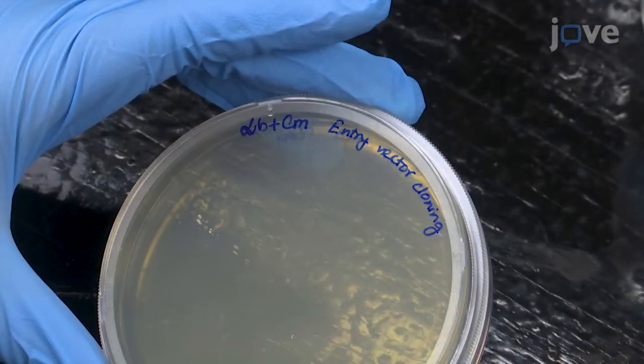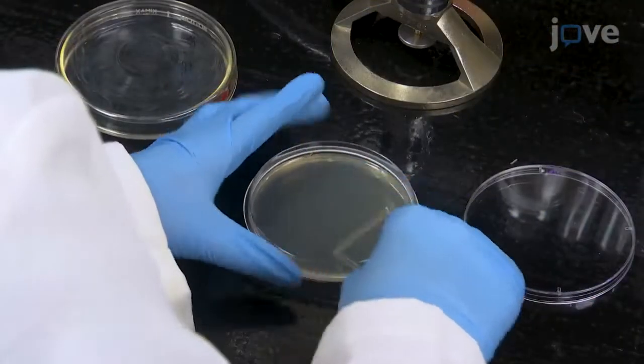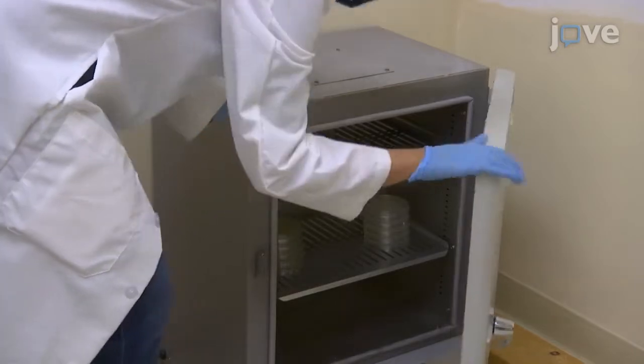Spread the cells on an LB plate with 35 micrograms per milliliter chloramphenicol. Then incubate the plate at 37 degrees Celsius overnight.